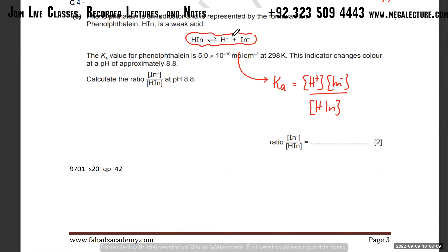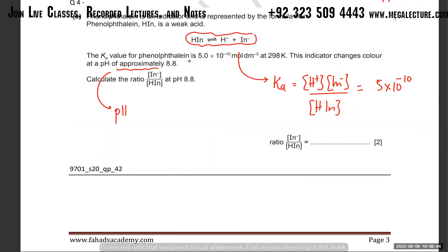Since this reaction also produces H⁺ and an anion, it has the same format. The Ka value given for this compound is 5 × 10⁻¹⁰. We're also told the pH is approximately 8.8.